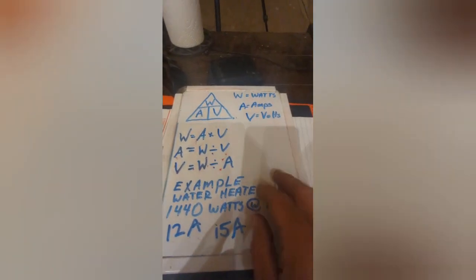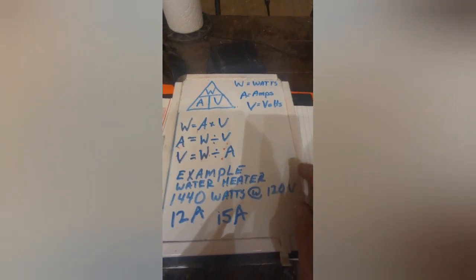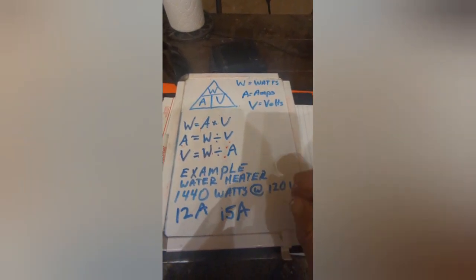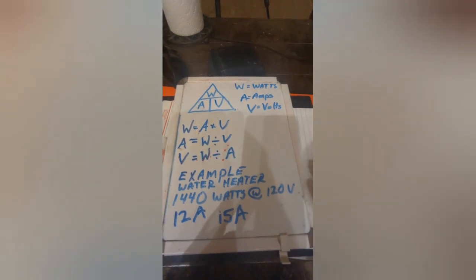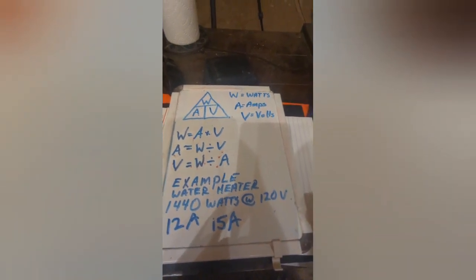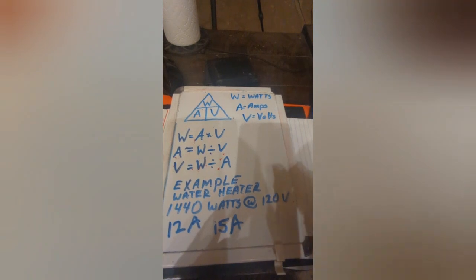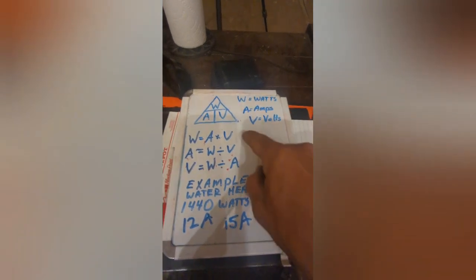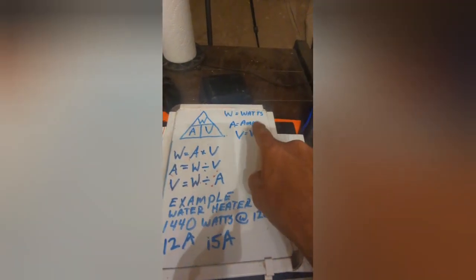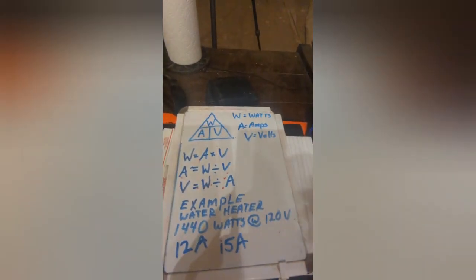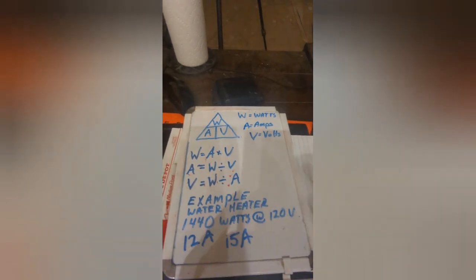Alright, everybody. So now what we need to know is we need to figure out how to determine what size breakers that we're going to need. And in order to do that, we need to know how much power we're pulling off of each one of these circuits. So this is called a power triangle and you can see your Watts, amps, volts, and you can just remember this. You can look this up online. They even have little calculators online. You don't even have to do this math.